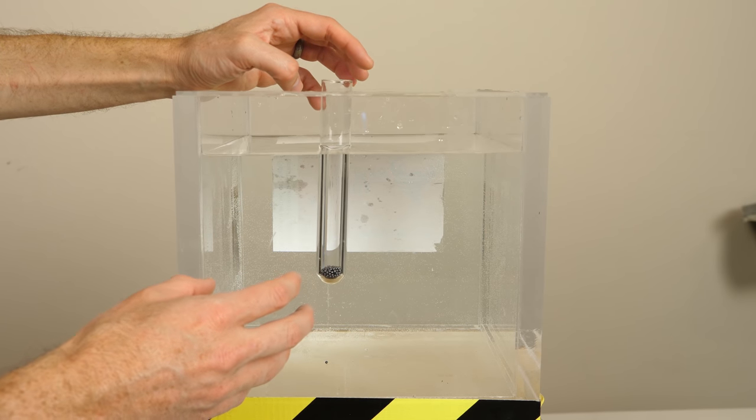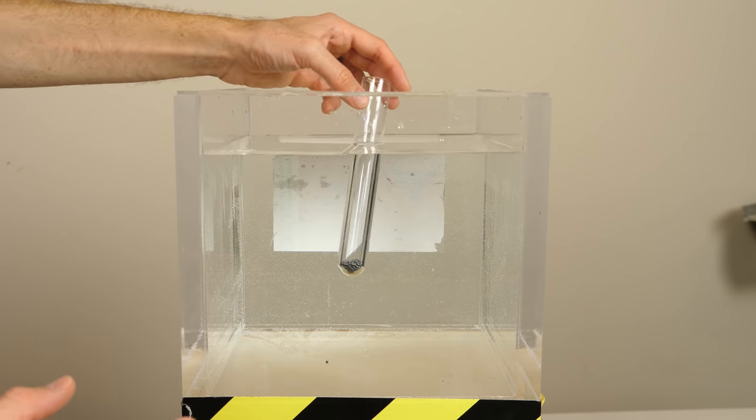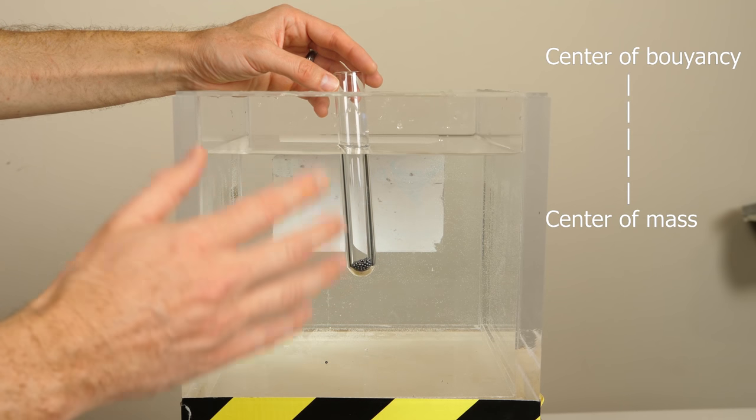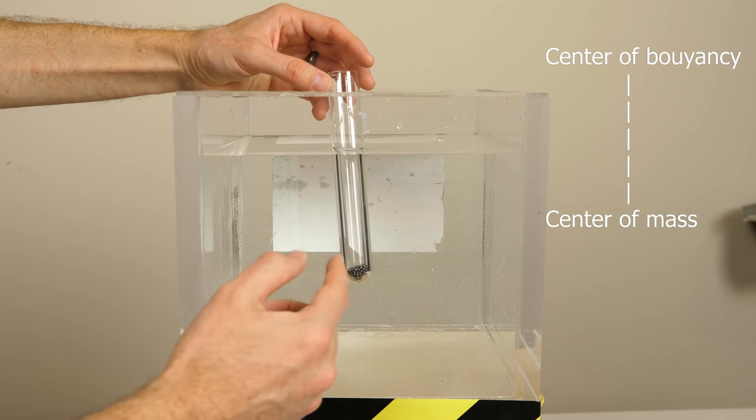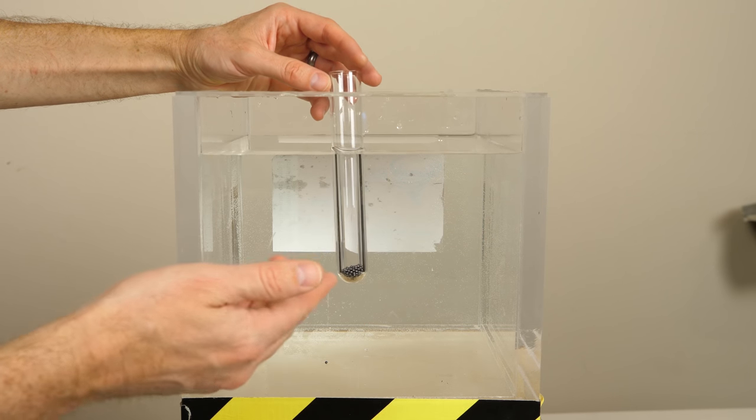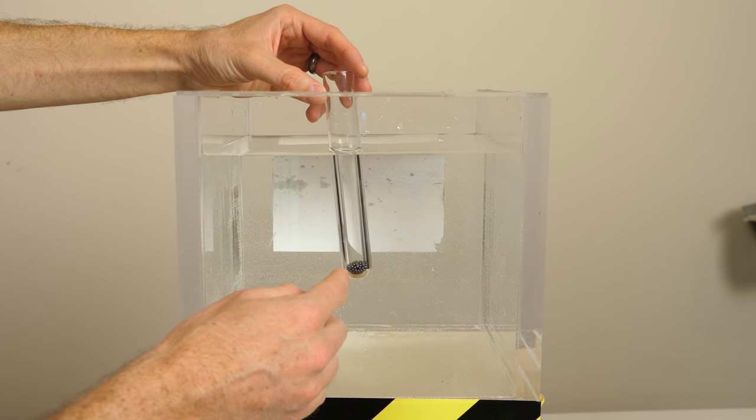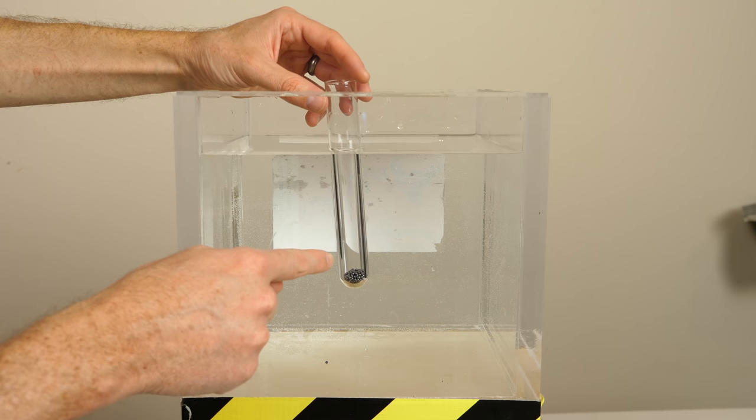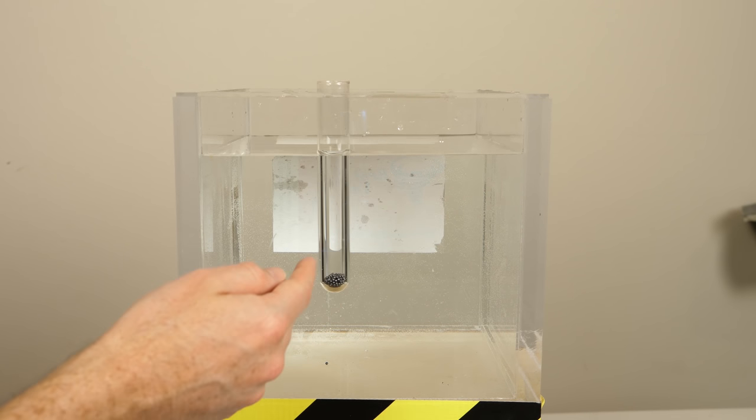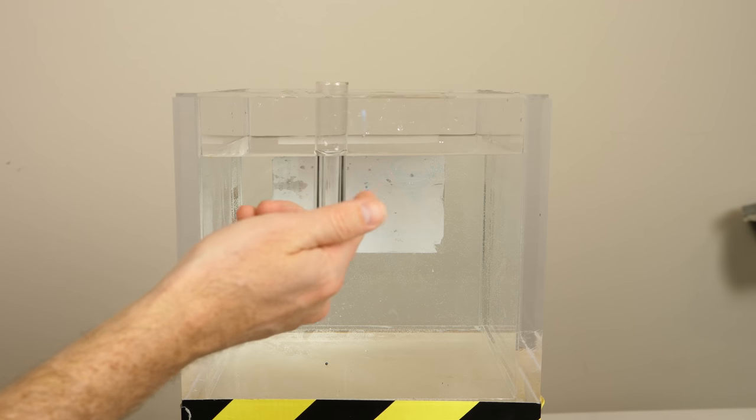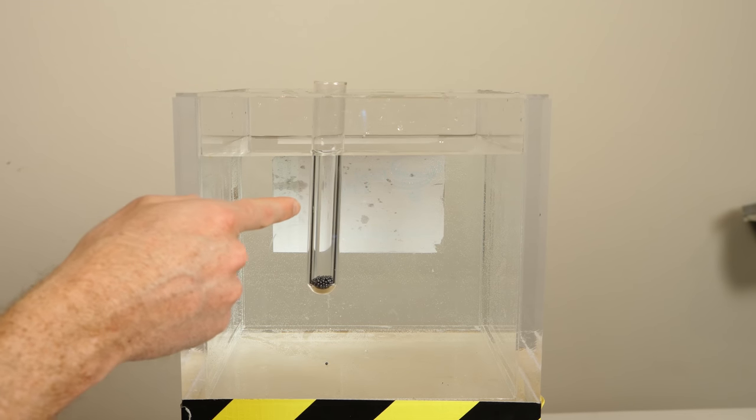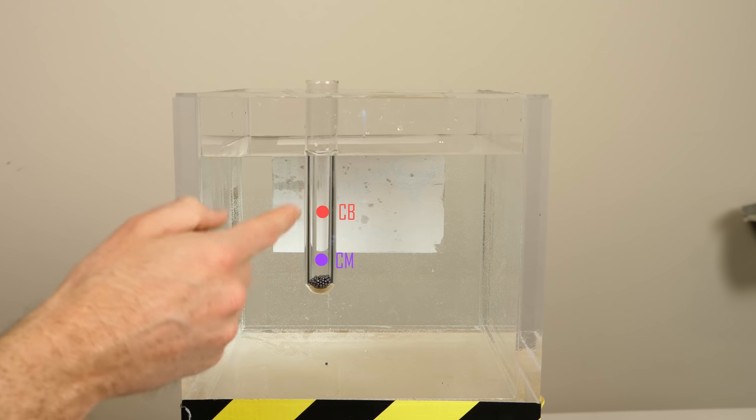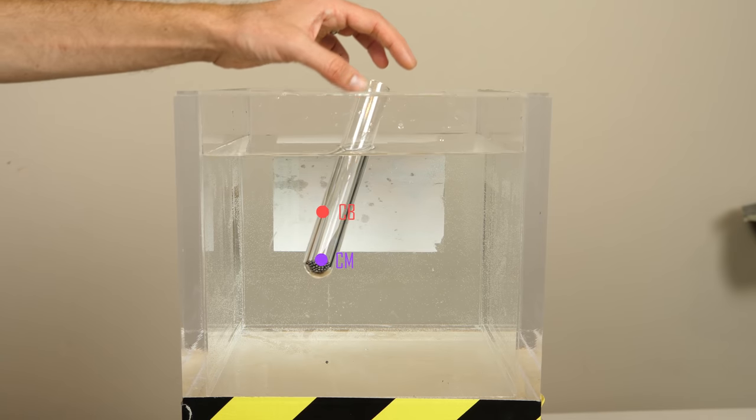So the reason it's able to float now is because in order for something to float stably, its center of mass needs to be below its center of buoyancy. And what that means is a center of mass just means where the average weight of the object is. So you can see that most of the weight is right at the bottom of this tube. So its center of mass is about right there. And its center of buoyancy is just the geographical center of everything that's below the water. So its center of buoyancy is about right here. So you can see that the center of mass is clearly below the center of buoyancy. And so it floats stably.